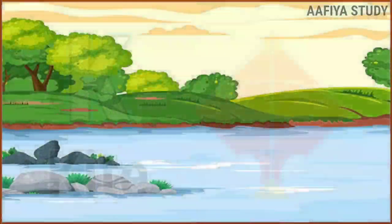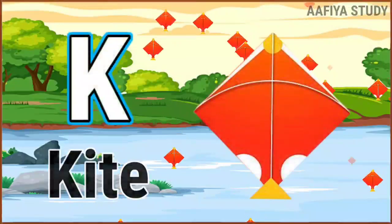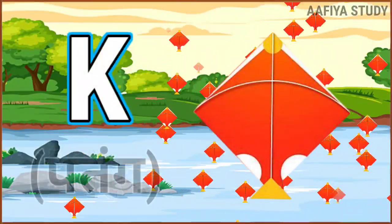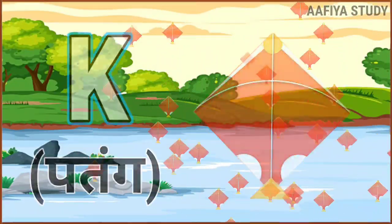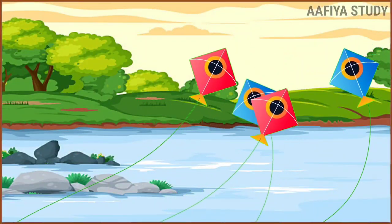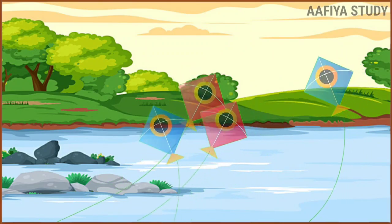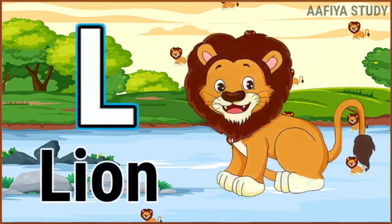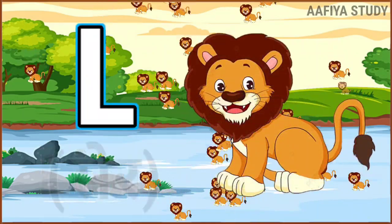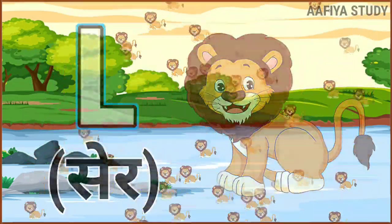K for kite, kite means patent. L for lion, lion means shee.